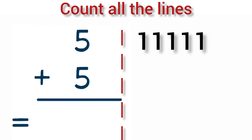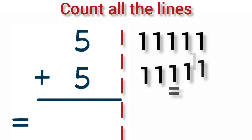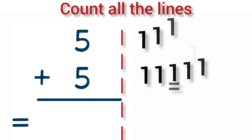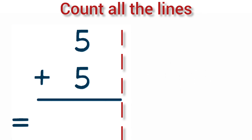Add 5 plus 5. 5 lines plus 5 lines is equal to 10. So, 5 plus 5 is equal to 10.